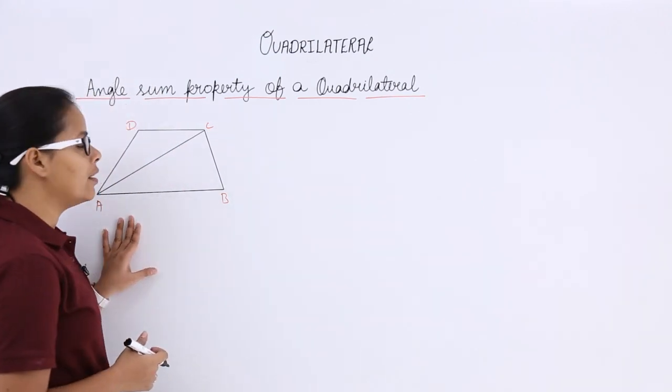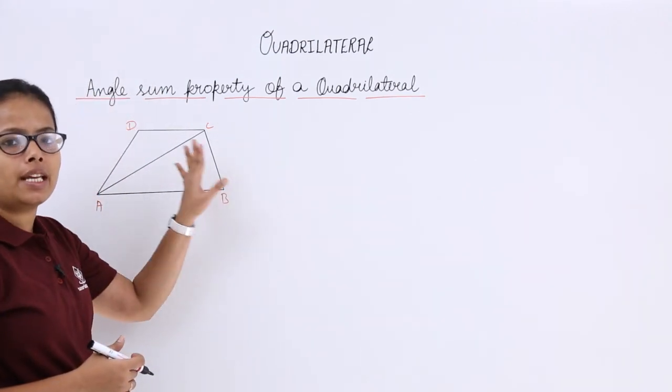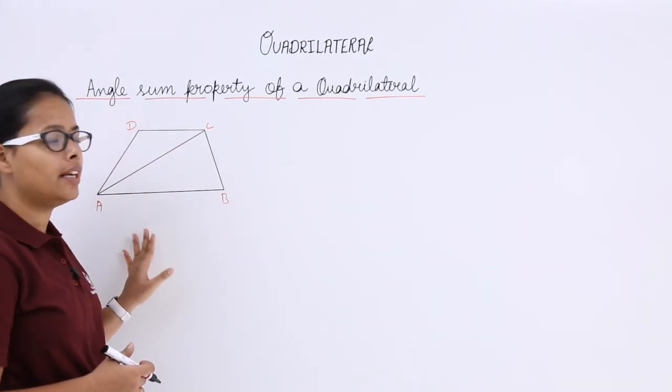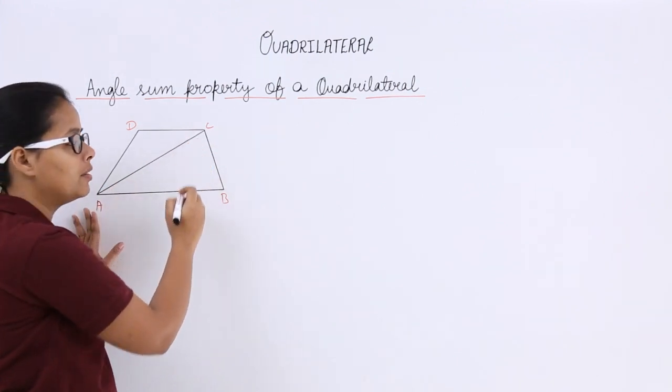You can see here the quadrilateral A, B, C, D, in which this is the diagonal here.